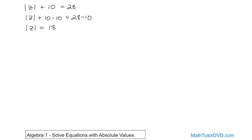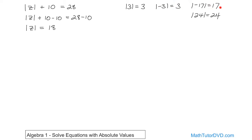If you remember back — I'll do a quick little review — the absolute value of 3 is 3. If you don't remember this stuff, go back to the section on absolute value and watch that. The absolute value of negative 3 is positive 3. The absolute value of negative 17 is 17. The absolute value of 24 is 24. When you see the absolute value sign, you take away the sign and the answer is just whatever the number is without the sign. If it's a negative number, you just get the number back without the sign.